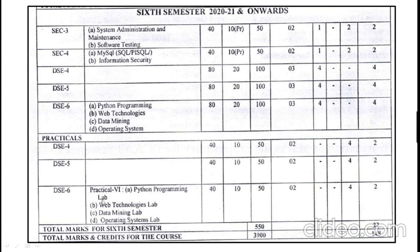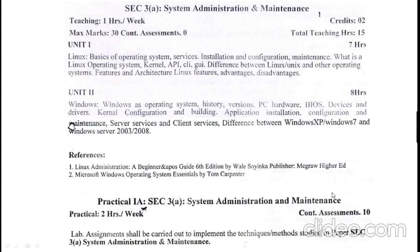In Computer Science, the practical subjects are Python Programming, Web Technology, Data Mining, and Operating System. Based on the chosen subject, the student may appear in the practical labs for 50 marks. In total, the student can appear for exams worth 515 marks in the 6th semester, and a total of 22 credits should be earned. This is the overview of the BSc 6th semester syllabus.